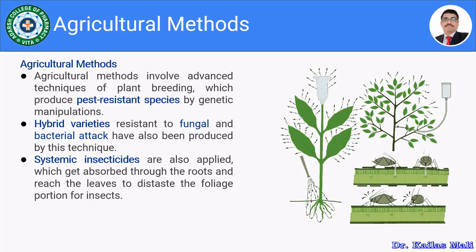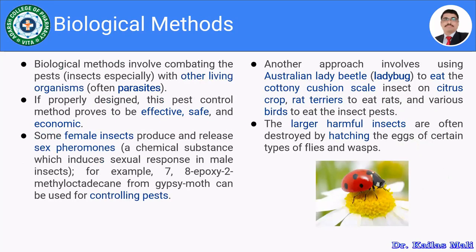So the first technique was the mechanical method and the second method is the agricultural method. The third method is the biological method. The biological method involves combating pests and insects with other living organisms. We are dependent on each other for food — we depend on crops, we depend on certain animals, and certain animals and insects depend on other animals or insects. The same concept is utilized for pest management in the farm — that is the biological method.